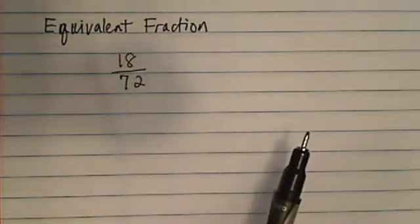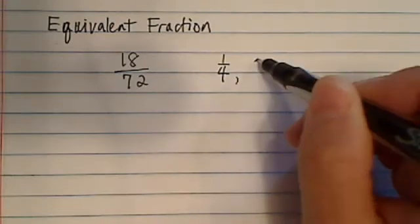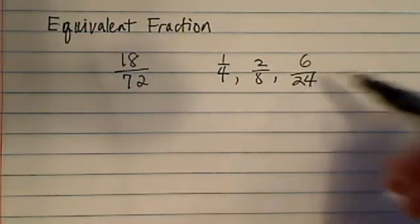If I give you 18 over 72, and someone says 18/72 is also equal to 1 over 4, or 2 over 8, or someone else says it's equal to 6 over 24.